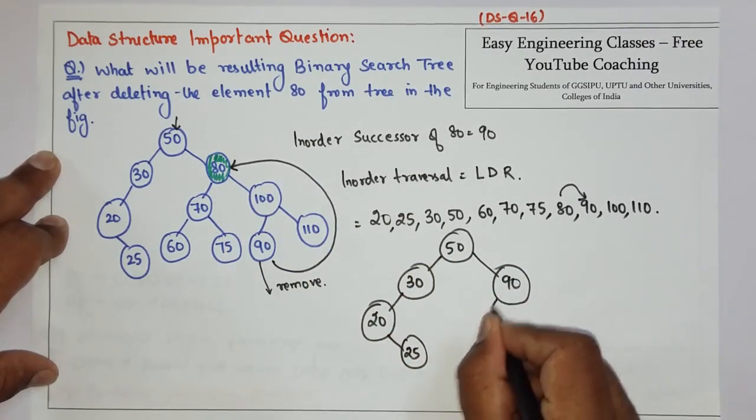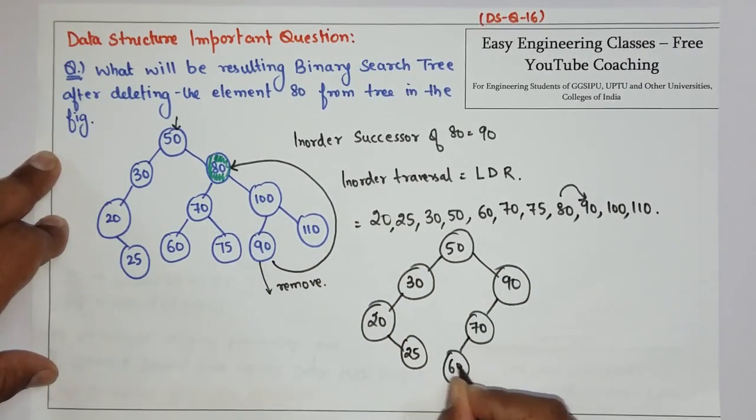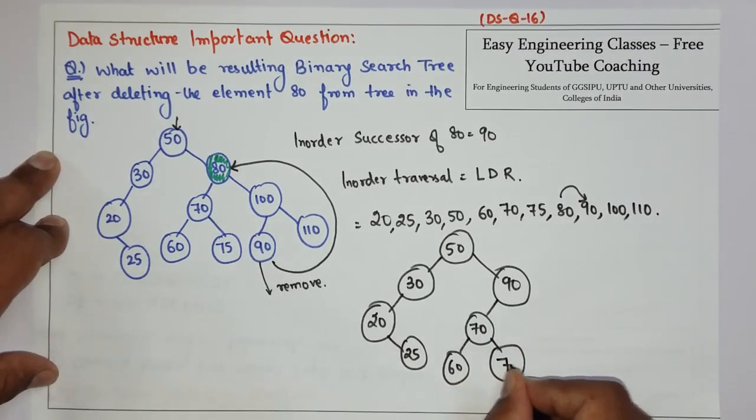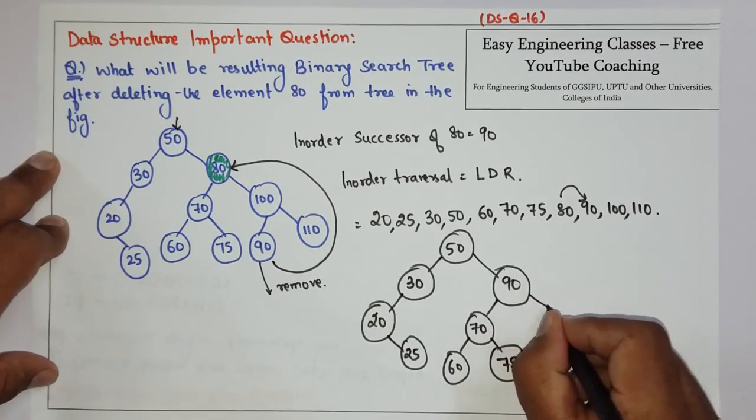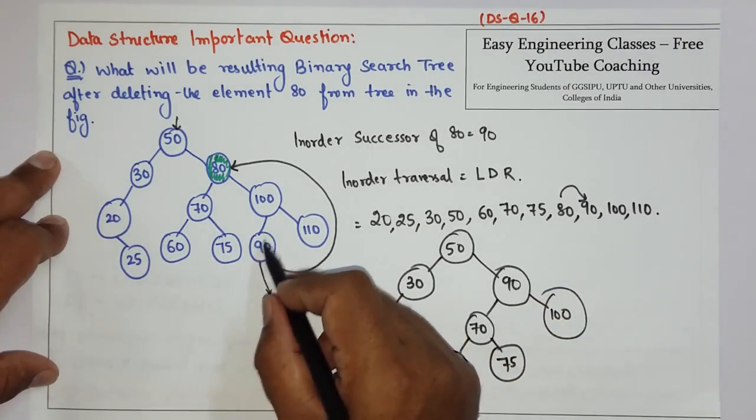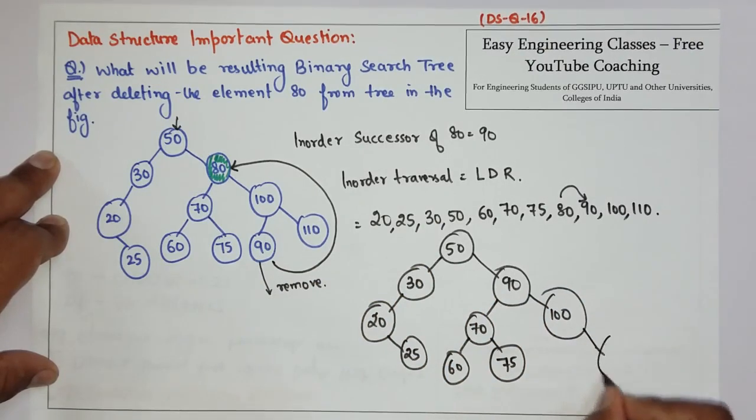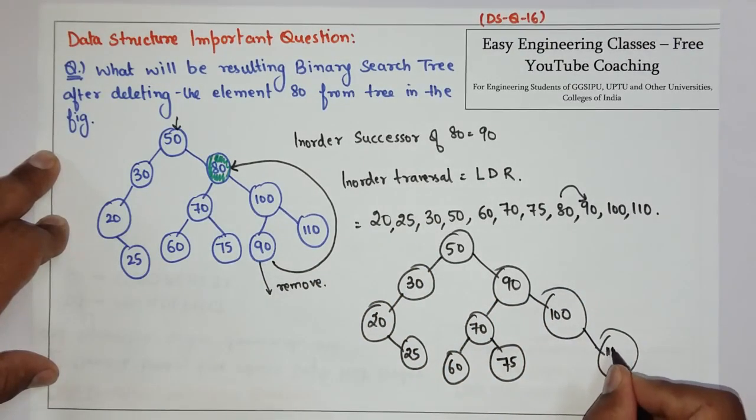So 90, 70, 60, 75, 100, and we have to remove this node, so I am not making a node here. And then finally 110.